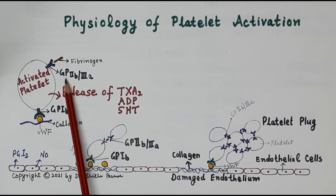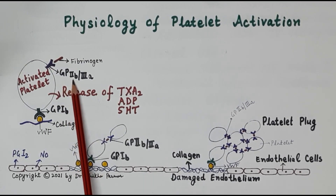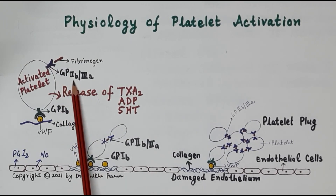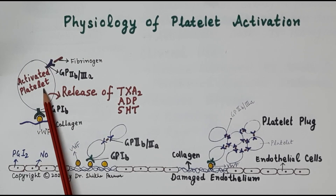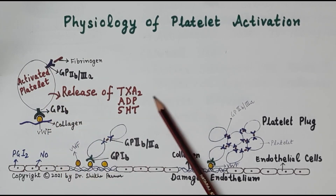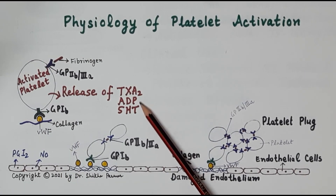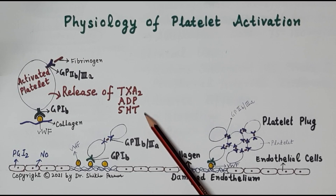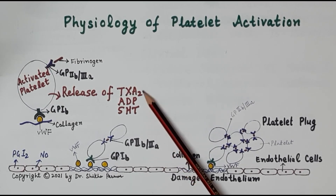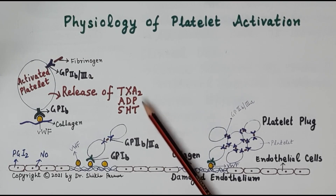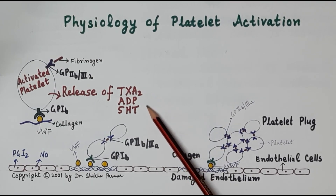Activated platelets release mediators of platelet aggregation, namely thromboxane A2, ADP (adenosine diphosphate), and 5-hydroxytryptamine (5-HT or serotonin). These are very potent mediators of platelet aggregation and are all released by the activated platelet.